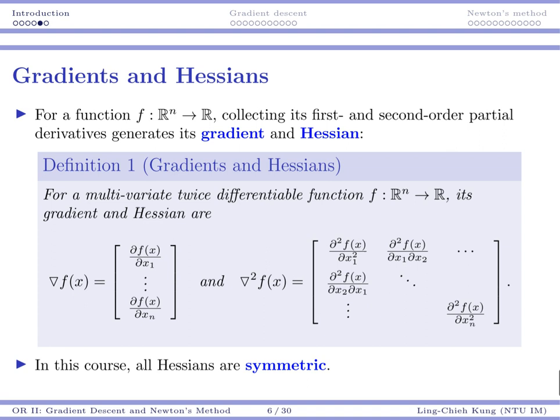So for a function where you have n independent variables, or n x variables, if that's the case for the n input, we may differentiate the function with respect to each of the input. That would give us a lot of partial derivatives. And once we collect those first order partial derivatives, we're going to get a gradient vector.